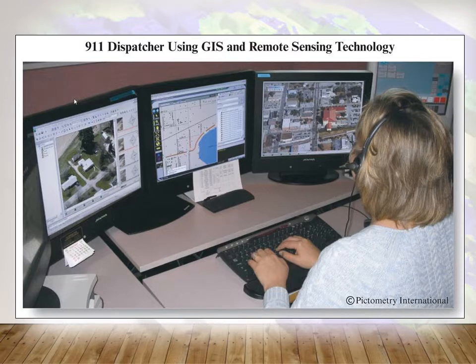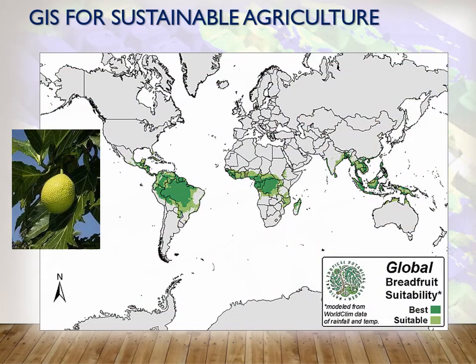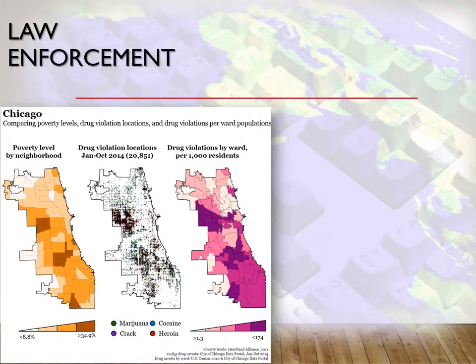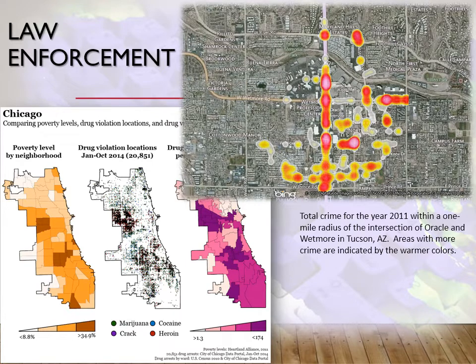Some more examples of GIS in use: 9-1-1 dispatchers often rely on GIS or remote sensing technology to help with emergencies. In sustainable agriculture, we want to map out the best areas that provide the type of crop you're trying to grow, such as a breadfruit. In law enforcement, there is a lot of GIS used — we could have real-time maps for crime. What you're seeing here is the city of Chicago, where I grew up, and then Tucson, where areas shown in warm colors are crime-stricken areas.